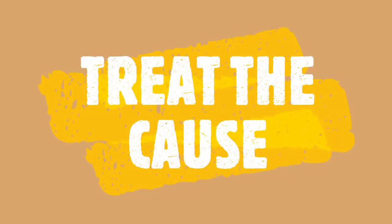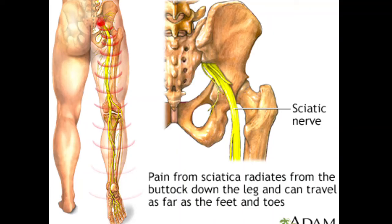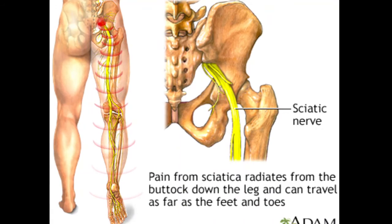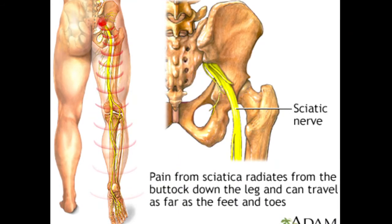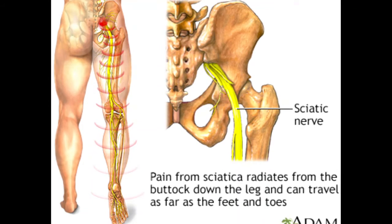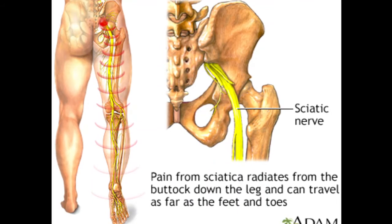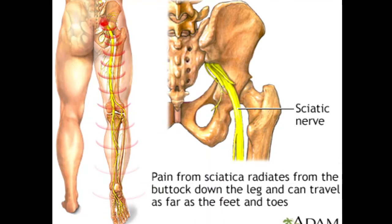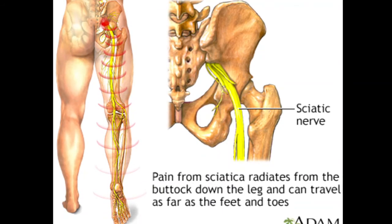It depends on the cause. We need to know the cause, and when we address it, your sciatic pain will end. If you have a disc bulge or your vertebrae are out of place, if we fix it, then your sciatic pain will go. Sciatic pain happens like this: if you feel the pain, it radiates from your hip region down your whole leg, either on the right side or the left side. We call this sciatic pain.